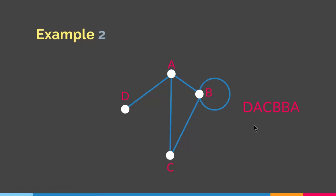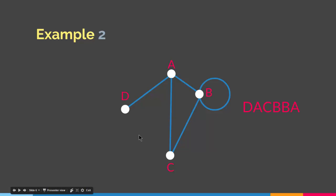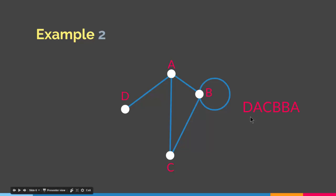If we have a graph like this, an Euler path would be a path that goes from D, A, C, B, B, A. Even though we have a loop, we can still create an Euler path. So we start from D, go to A, go to C, go to B, come back to B again because it's a loop, and then go to A, ending at A. As you can see, in this particular path we have gone through all the edges of the graph and gone through them exactly once.